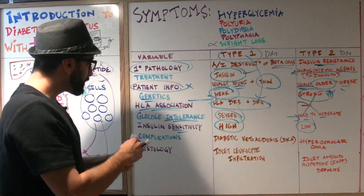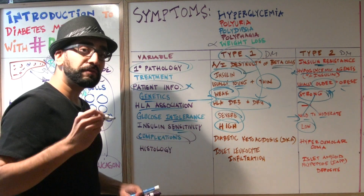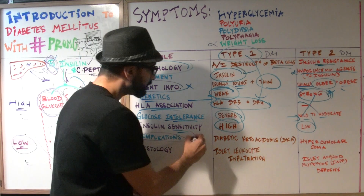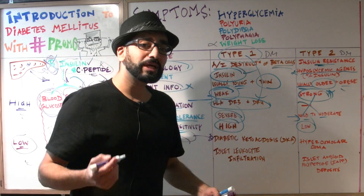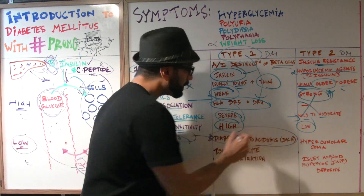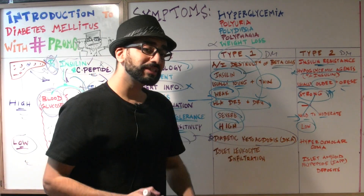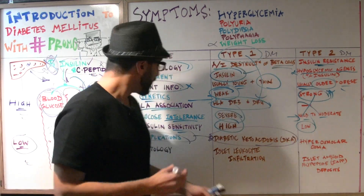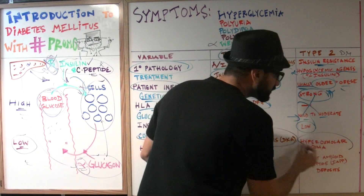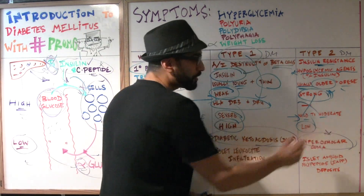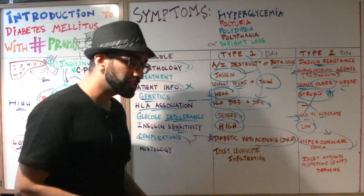Now let's get to some very important stuff — complications. That's why we're going to take a few lectures to discuss all of this. Type 1 diabetics are prone to developing diabetic ketoacidosis, which is a very serious condition we'll talk about in a future lecture. With type 2 diabetes, another serious condition is hyperosmolar coma. Make sure you memorize those two important facts for next week's lectures so you're already one step ahead.